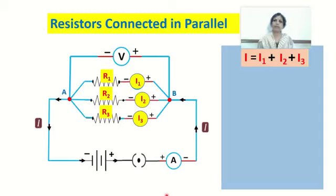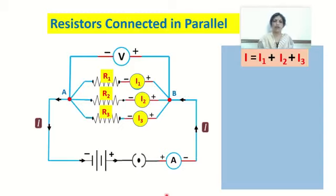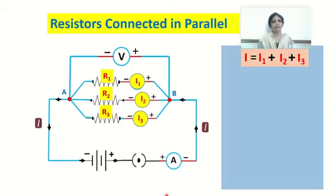This is a very important point: when resistors are connected in parallel, the current flowing through every resistor is different. This is exactly the opposite case compared to resistors connected in series. In parallel, the potential drop across the combination remains constant, but the current through every resistor is different. The total current flowing through the circuit equals the sum of the currents flowing through every resistor connected in parallel.